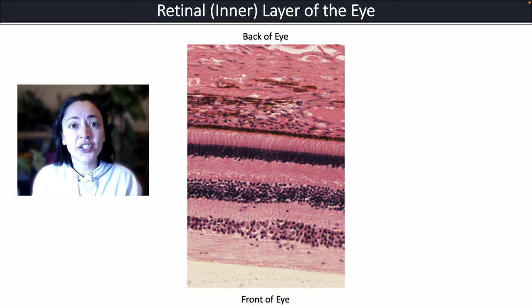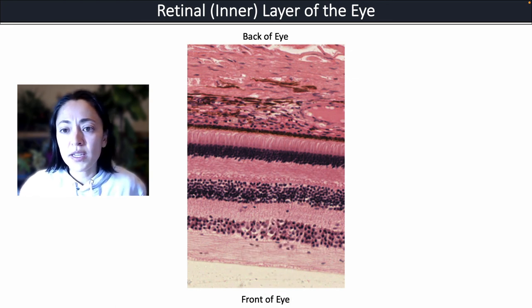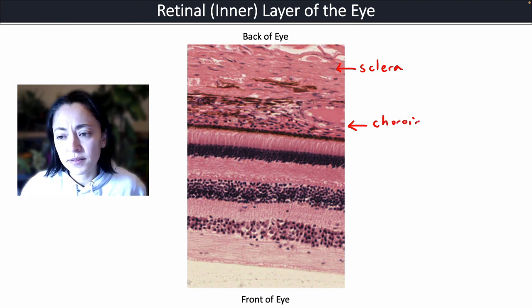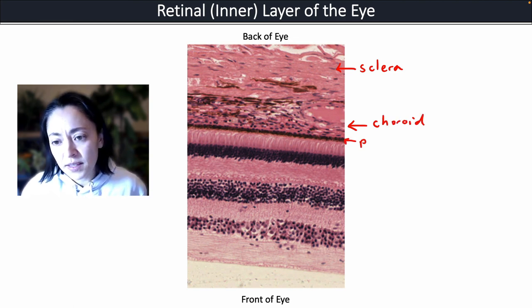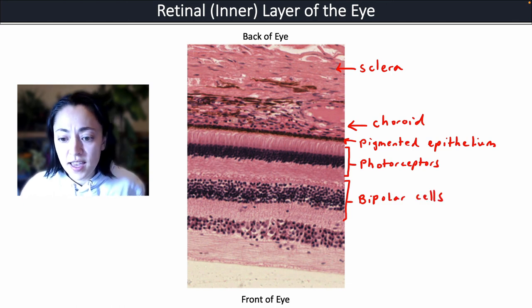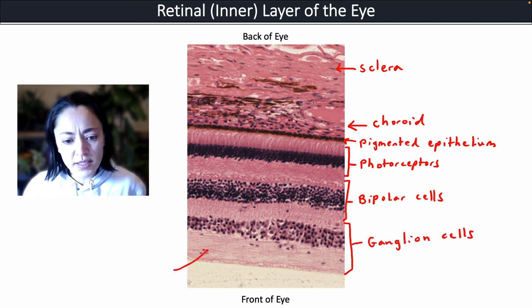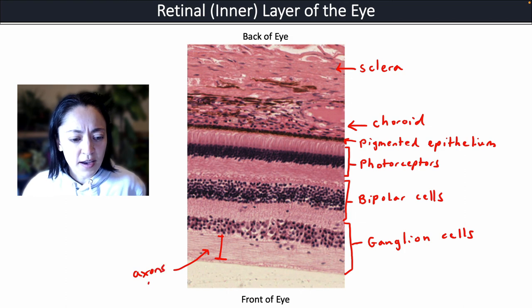Now let's use everything we've learned to label a microscope image showing the layers of the eye. This image is oriented so that the back of the eye is on one side and the layers toward the front are on the other. Here we have the sclera, then the choroid, followed by the pigmented epithelium of the retina, then the photoreceptors, the bipolar cells — which are our first sensory neurons — and then the ganglion cells. Here you can see the light area representing the axons of the ganglion cells.